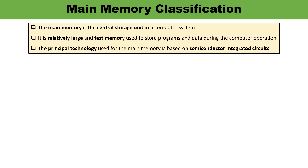Main memory is the central storage unit of any computer system. It is a relatively large and very fast memory used to store programs and data during computer operations. The principal technology used for main memory is based on semiconductor integrated circuits. Main memory is faster and relatively large.